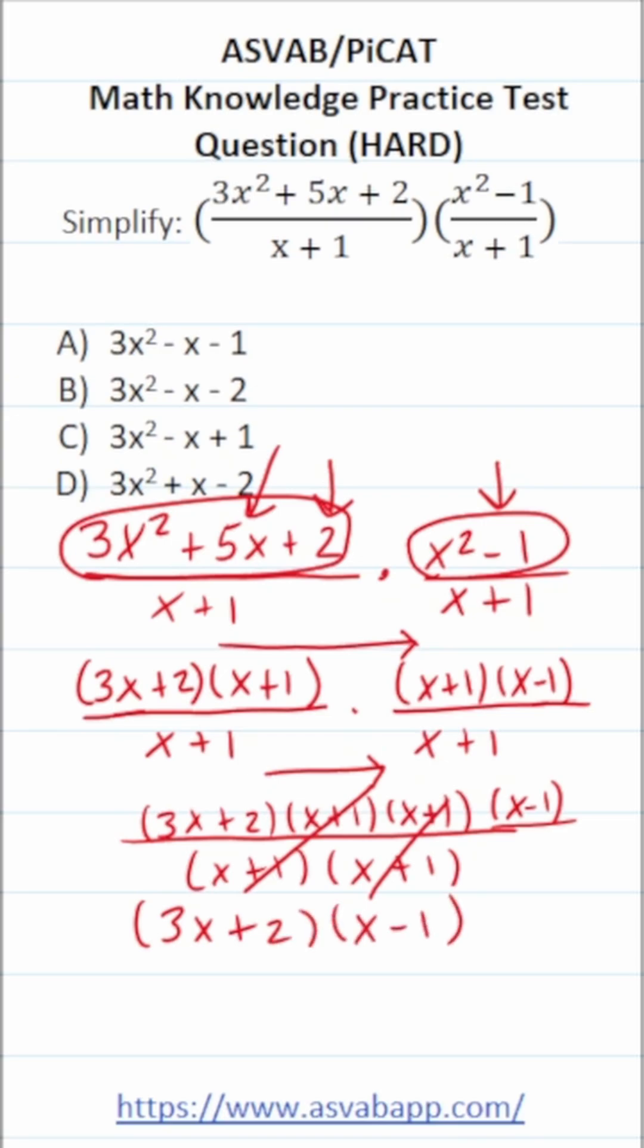That's clearly not an answer choice because we can simplify this even further by expanding this by foiling it. So we're going to take 3x, we're going to multiply it here and here. And then we're going to take 2 and multiply it here and here. 3x times x is going to be 3x squared. 3x times negative 1 is negative 3x. 2 times x is positive 2x. 2 times negative 1 is negative 2.